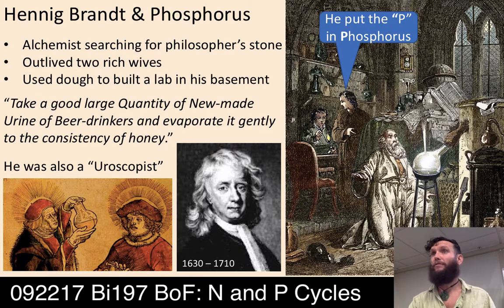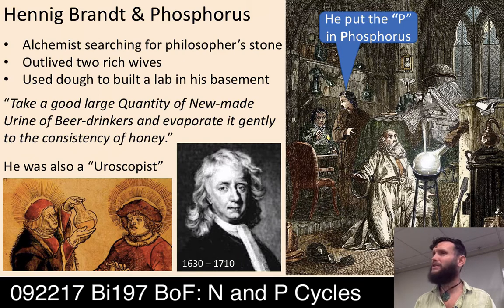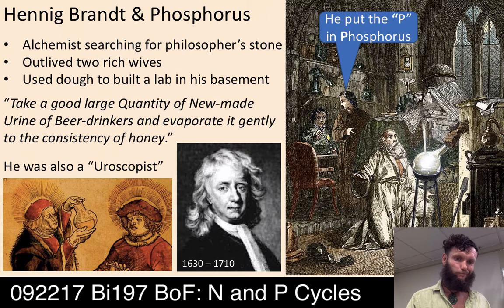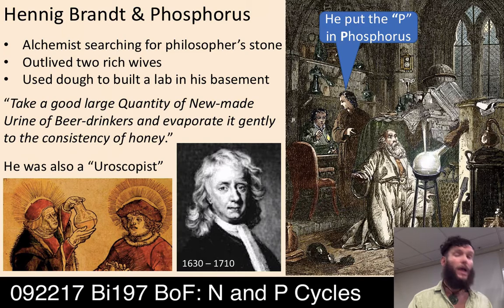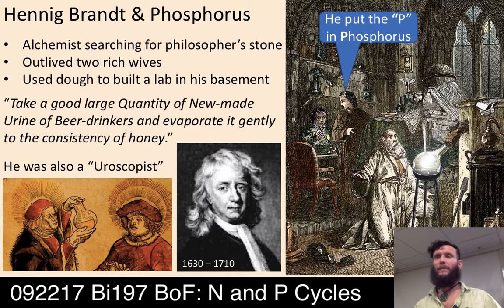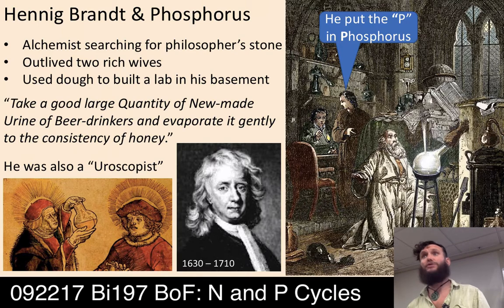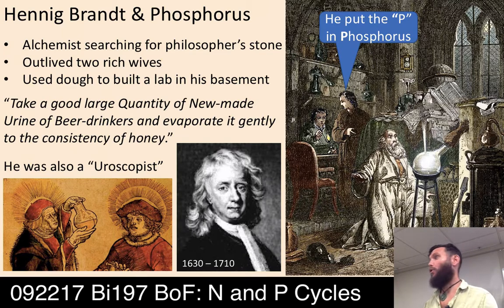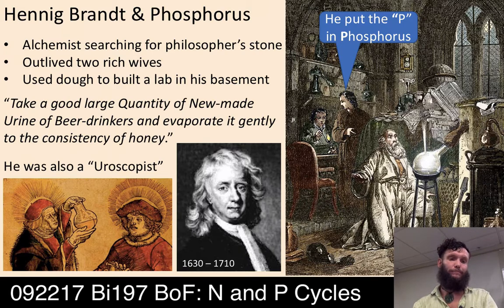Brandt was also looking for the Philosopher's Stone, as many alchemists were. The Philosopher's Stone was a mystical, mythical compound described in obscure texts that these people were obsessed with finding so they could live forever. They also believed it could turn base elements like lead into gold. They wanted to live forever and have all the money.